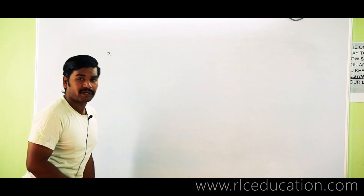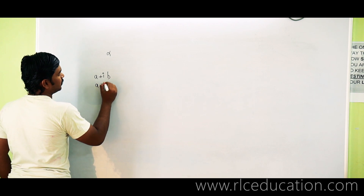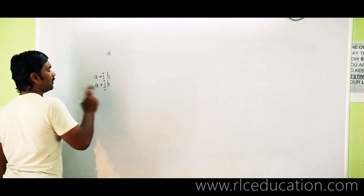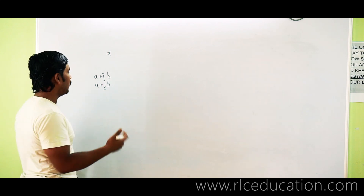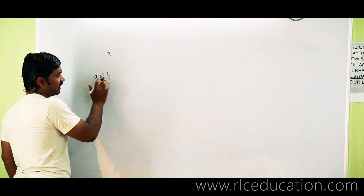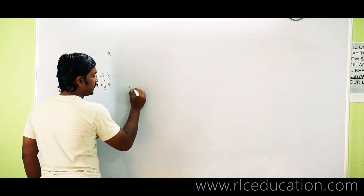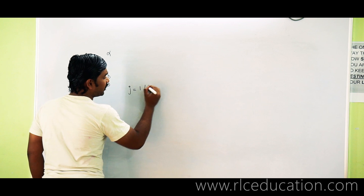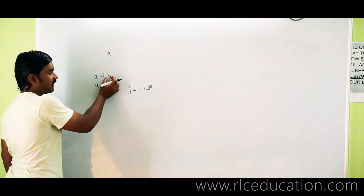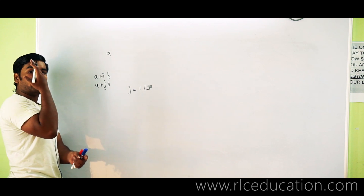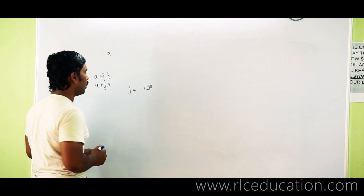Alpha equals 1 at angle 120 degrees. Just as j equals 1 at 90 degrees and multiplying by j rotates a vector anticlockwise by 90 degrees, multiplying by alpha rotates a vector by 120 degrees. This is the logic of the alpha operator.